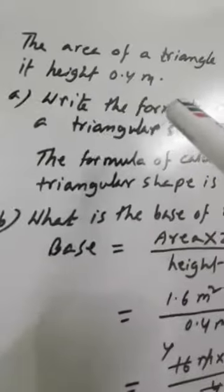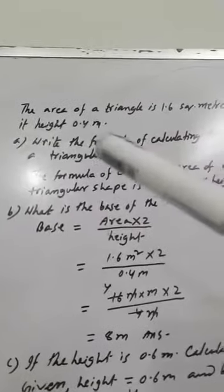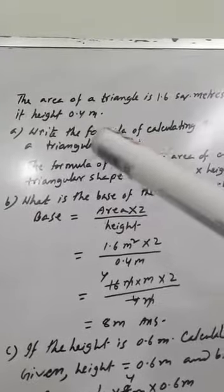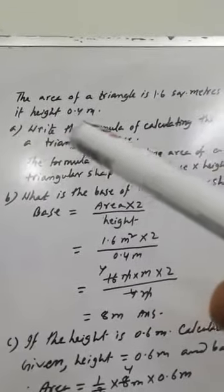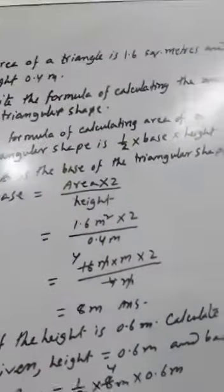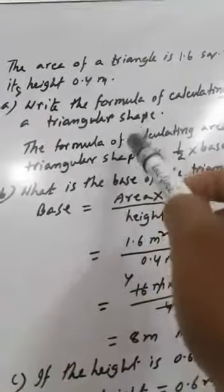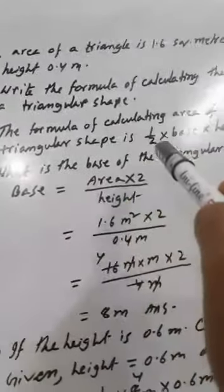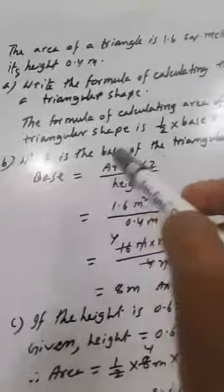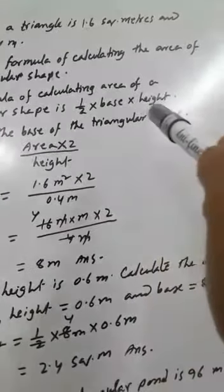Another problem: the area of a triangle is 1.6 square meters and its height is 0.4 meters. Write the formula for calculating the area of a triangle. The area of a triangle is half times base multiplied by height.